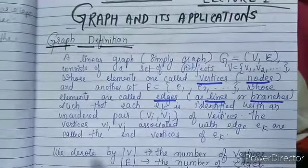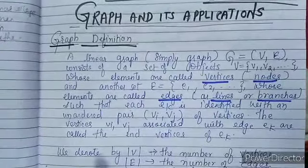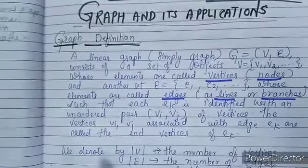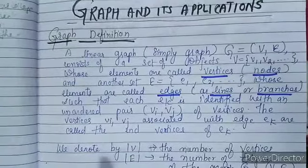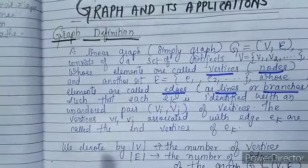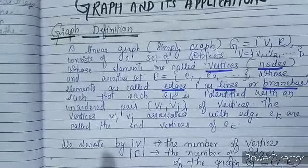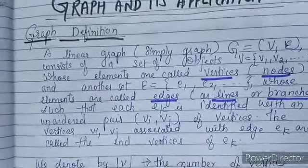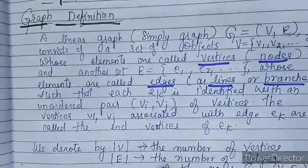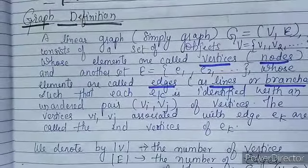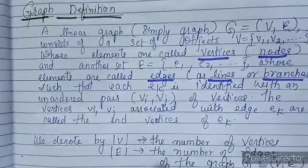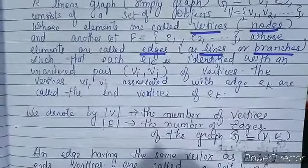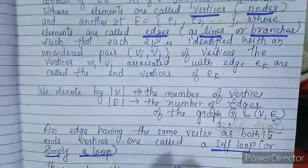A graph, or linear graph, simply a graph G equal to (V, E), where V is the set of vertices and E is the set of edges. V consists of objects V1, V2, ... whose elements are called vertices or nodes. And another set E = E1, E2, ... whose elements are called edges, lines, or branches. Each edge Ek is identified with an unordered pair (Vi, Vj) of vertices. The vertices Vi and Vj associated with edge Ek are called the end vertices of Ek. We denote by |V| the number of vertices and |E| the number of edges of graph G.